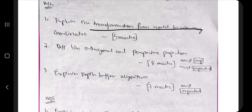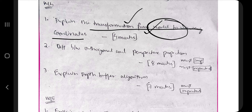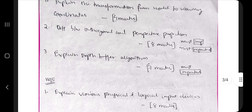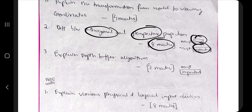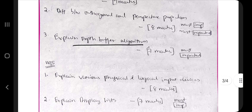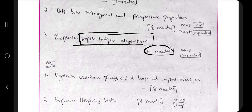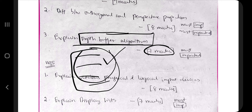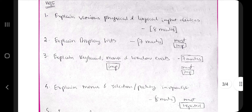Coming to Module 4, we have the transformation from world to viewing coordinates — this concept appears in modules 1 and 2 as well, so studying it from Module 4 lets you attempt those questions too. It's asked for only 4 marks but easy to score without spending much time. The gem of this module is orthogonal and perspective projection — an 8-mark question, most important and most repeated. You need to memorize the matrix values and concepts. The depth buffer algorithm is also very much repeated, asked for 7 marks, with a half-page algorithm plus equations.